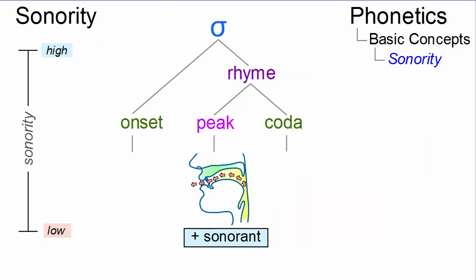The sonority scale is especially important when analyzing syllable structure and rules about what sound segments may appear in onsets or codas.